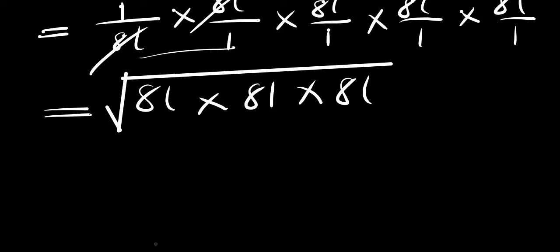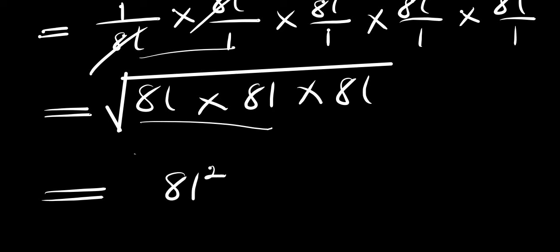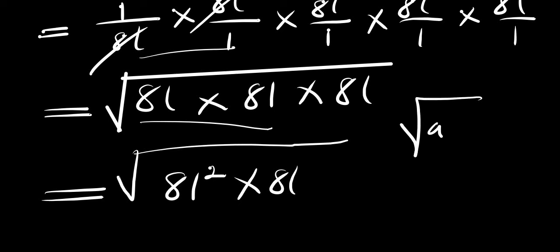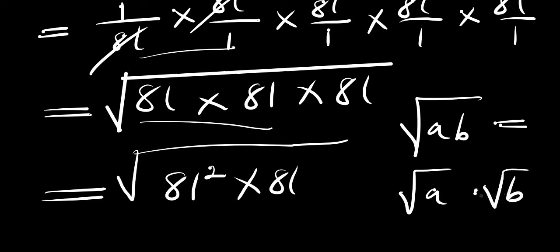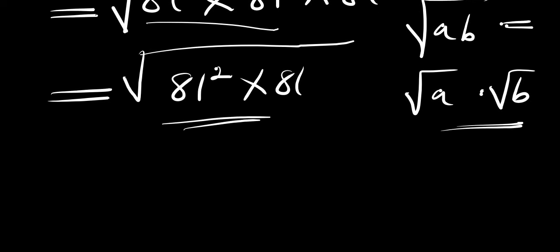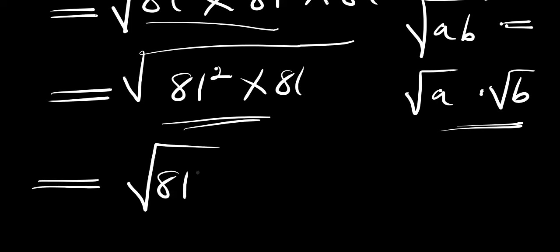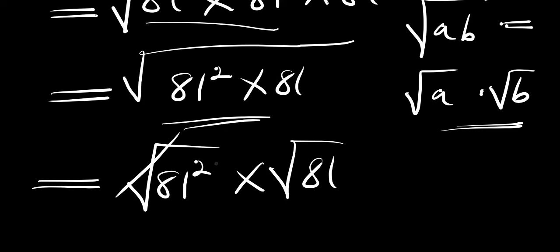So how do we simplify this? Let's concentrate on these first two terms: 81 times 81 is simply 81 raised to the power of 2, then we have the square root of that, times 81. Now if you have the square root of ab, this equals the square root of a times the square root of b. Applying this identity, we get the square root of 81 raised to the power of 2, times the square root of 81. This square root will eliminate the square, so we are going to have 81.